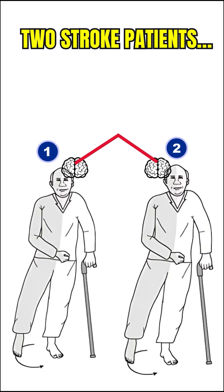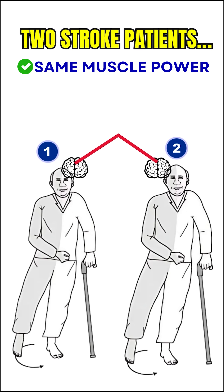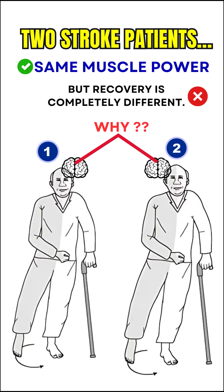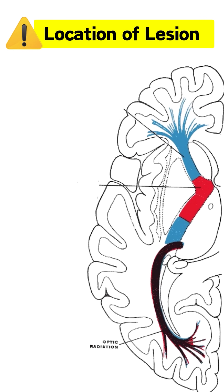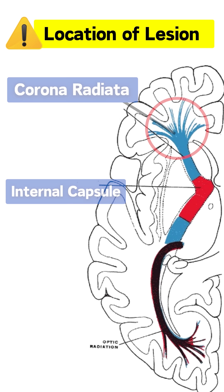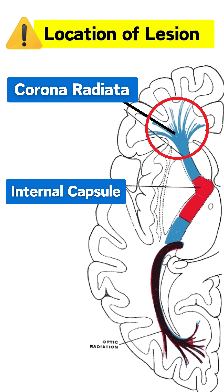Two stroke patients may show the same muscle power loss, but recovery is completely different. Why? Because the location of the lesion matters the most. Let's take an example where one patient has an internal capsule stroke while the other has a lesion in the corona radiata.